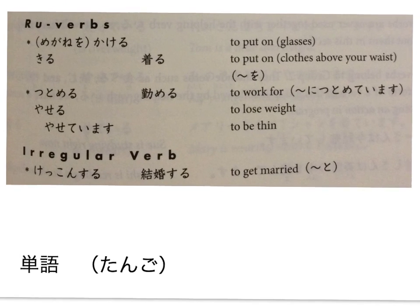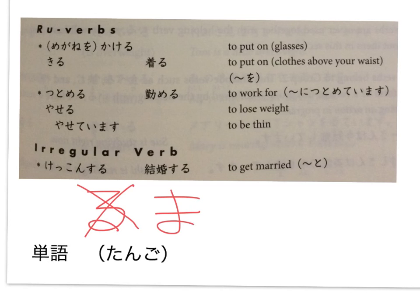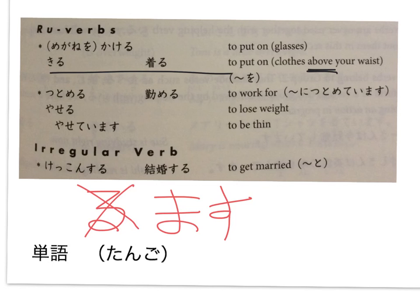And we have some RU-verbs. Again, these are focused on describing people — what they look like and what they're doing. So MEGANE O KAKERU. With a RU-verb, you just delete the RU and replace it with MASU. So TABERU becomes TABEMASU as an example of a RU-verb. KIRU, KIMASU — to put on. Where HAKIMASU is below your waist, KIMASU is above. TSUTOMERU, or TSUTOMEMASU, means 'to work for.' Note that this uses the NI particle. So: Watashi wa Apple ni tsutomete imasu. YASERU, YASETE IMASU — this being the opposite of FUTOTTE IMASU.